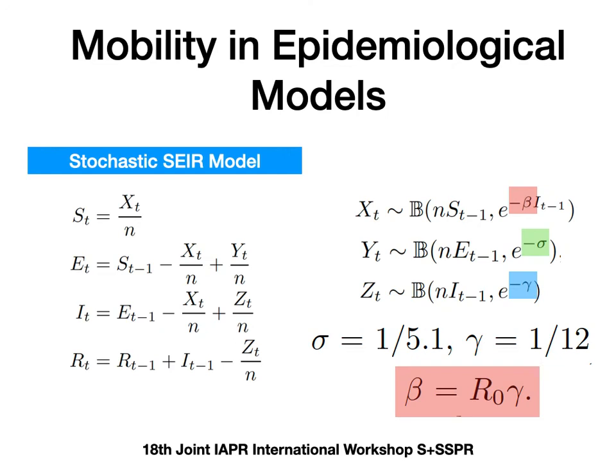For prediction, we use a stochastic SEIR model. A stochastic SEIR model is a classic compartmental model — it's not the unique choice, but it works pretty well locally. You have a set of different states: susceptible people, then from susceptible you pass to exposed, then to infected, and then to recovered. The change of state is driven by a differential equation, and here X, Y, and Z are coming from binomial distributions. X depends on the rate beta, which is related to the reproduction number R0, and sigma and gamma, and we estimate all these parameters.